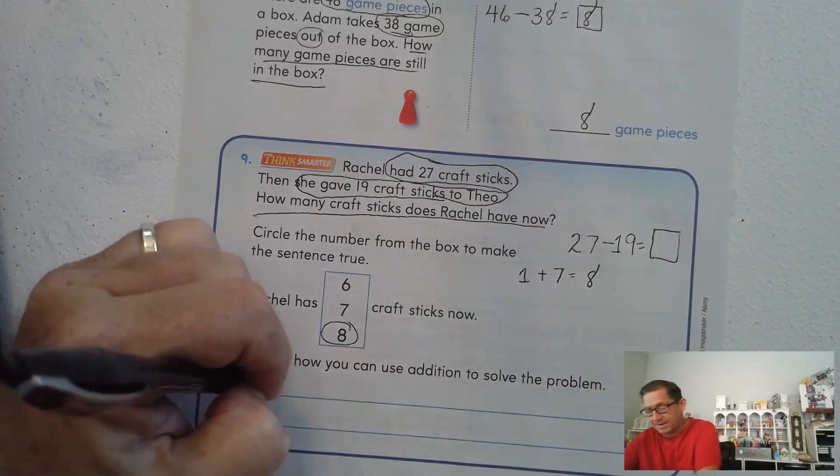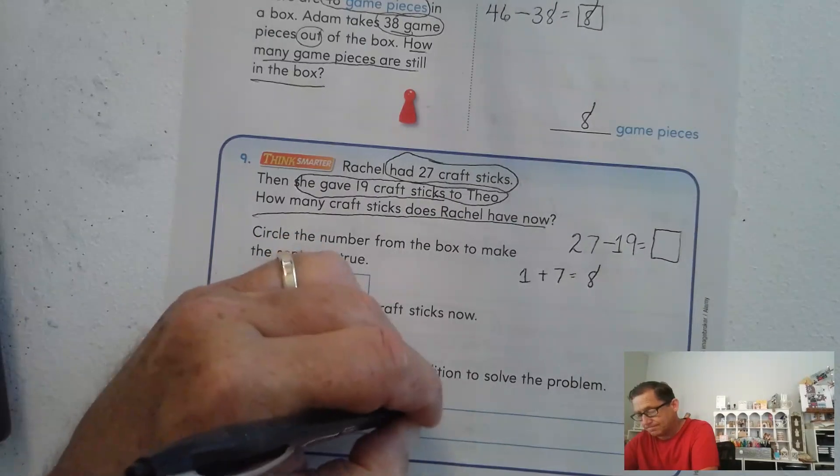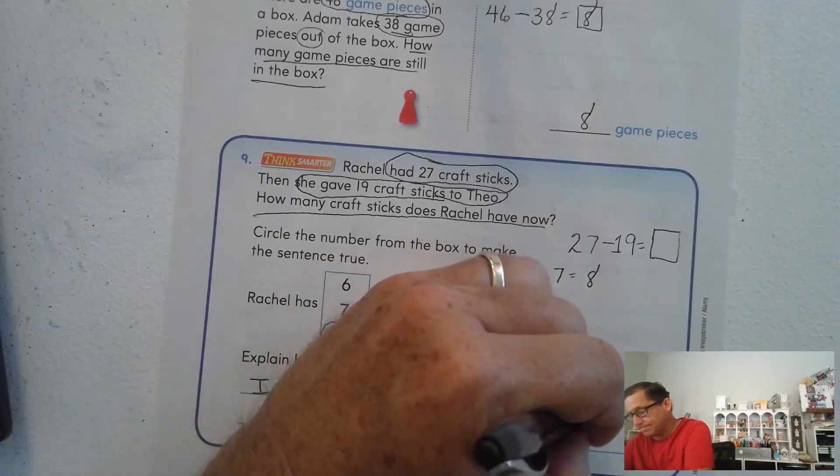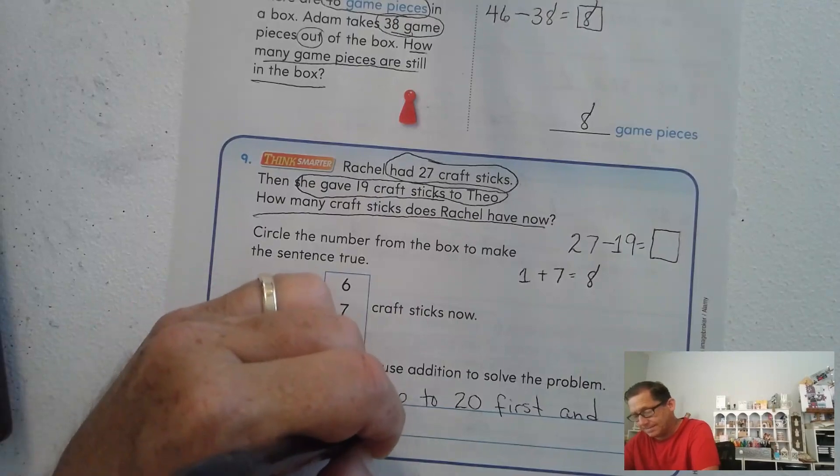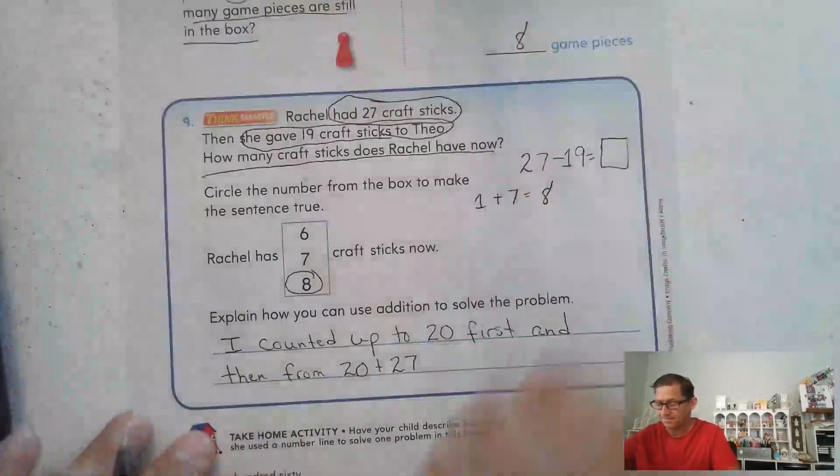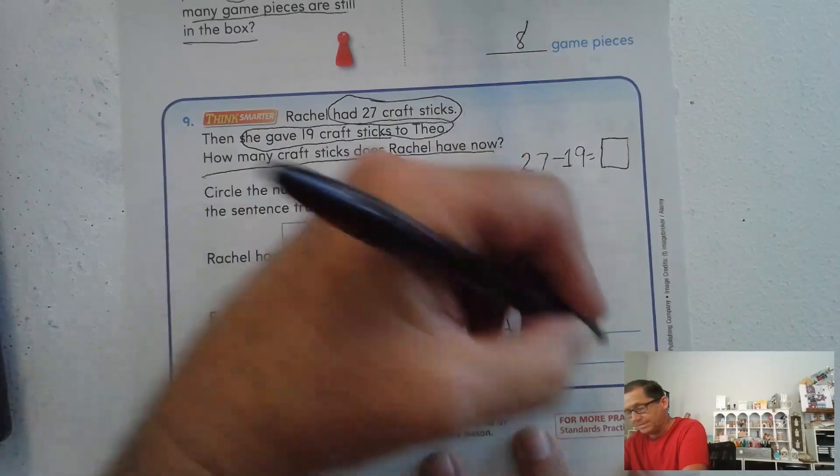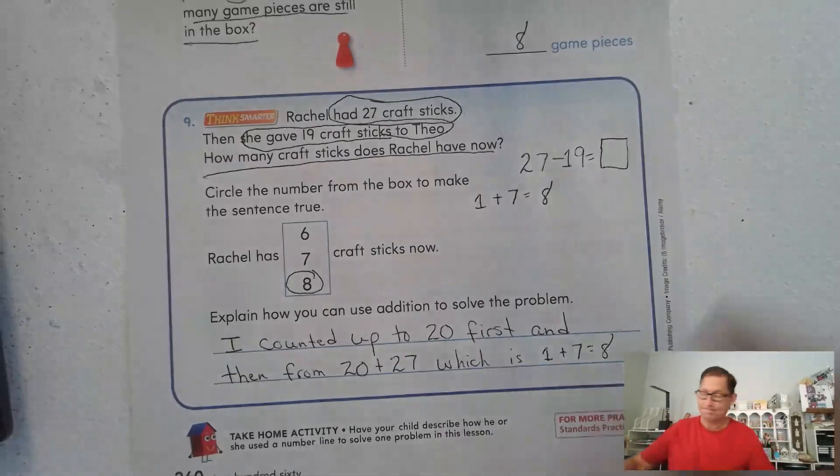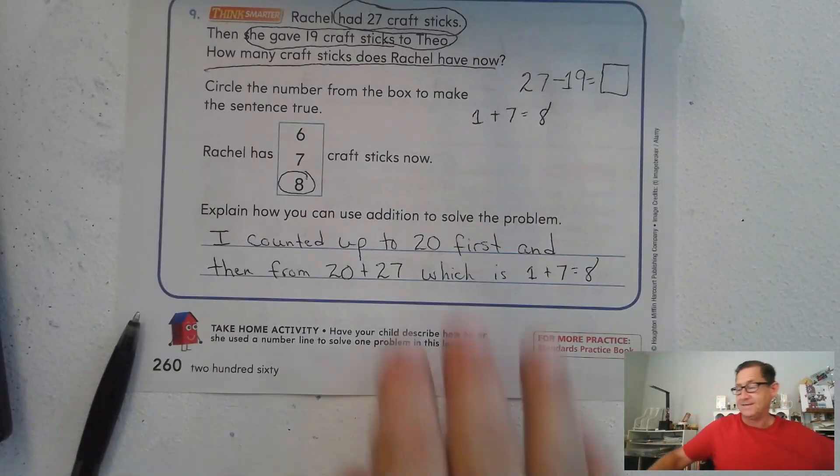So what did we do? I counted up to 20 first, and then from 20 to 27, which is 1 plus 7 equals 8. So that's it for using addition to find differences.